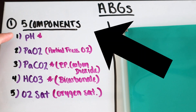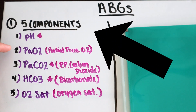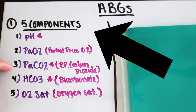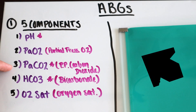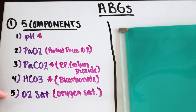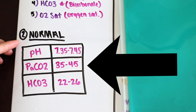Now let's dive into the five key components of an ABG. You have the pH, the partial pressure of oxygen, the partial pressure of carbon dioxide, bicarb which is HCO3, and your oxygen saturation.